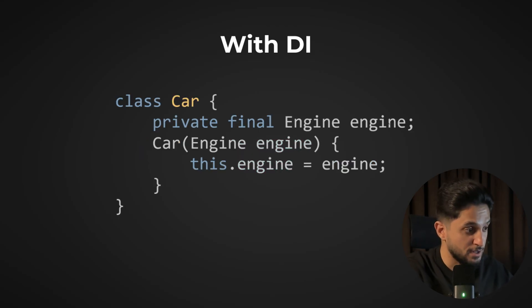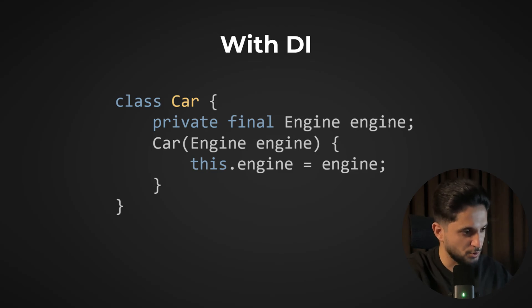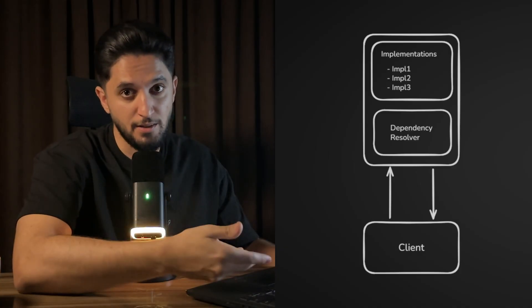With dependency injection, the class doesn't create its own dependency — instead it receives it from the outside. The car class has a field private final Engine, and the real instance is injected through the constructor. This is called constructor injection. Frameworks usually add something on top of this called a dependency injection container. The container is responsible for creating instances, preparing them, and providing them to classes that need them without those classes explicitly asking for them.